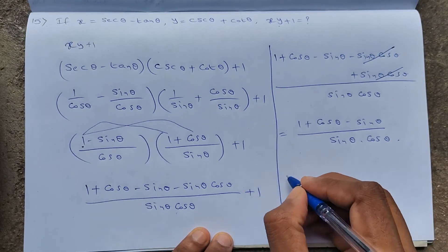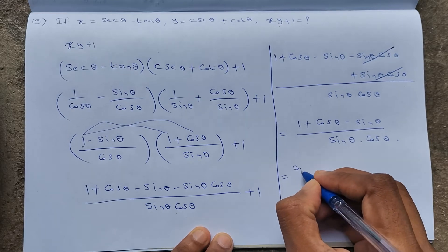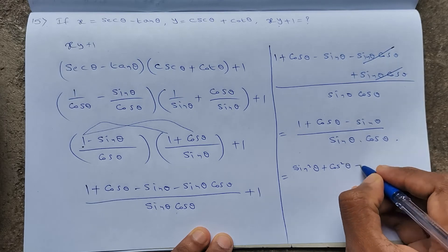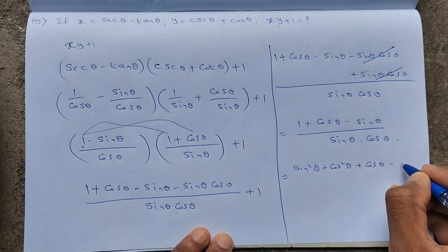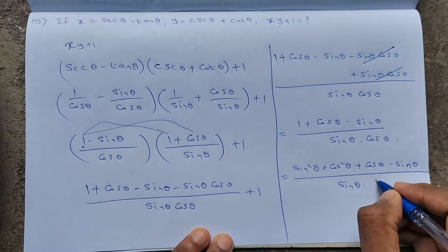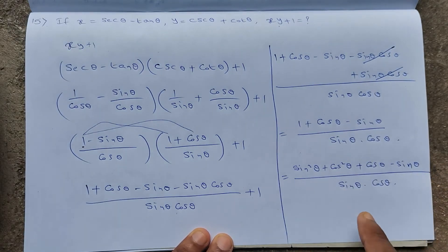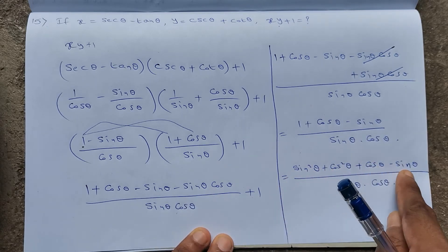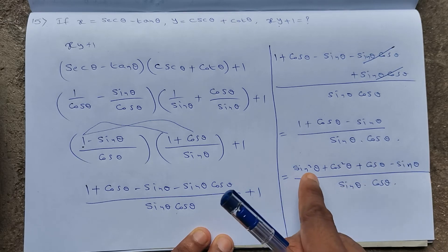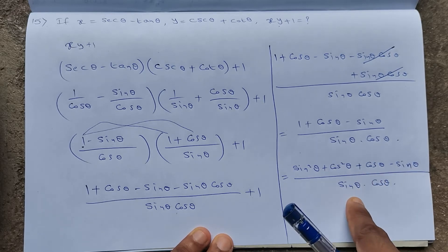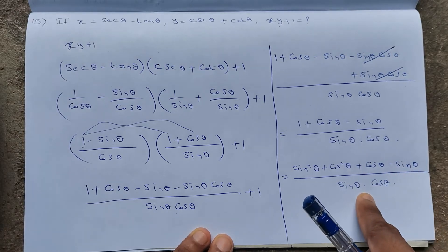Replacing 1 with sin²θ + cos²θ: (sin²θ + cos²θ + cosθ − sinθ) / (sinθ cosθ). Separating each term: sin²θ/(sinθ cosθ) + cos²θ/(sinθ cosθ) + cosθ/(sinθ cosθ) − sinθ/(sinθ cosθ).